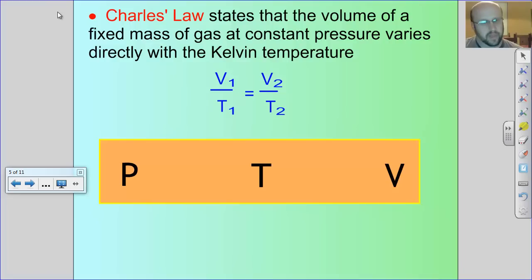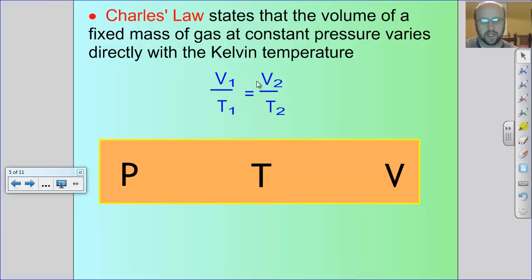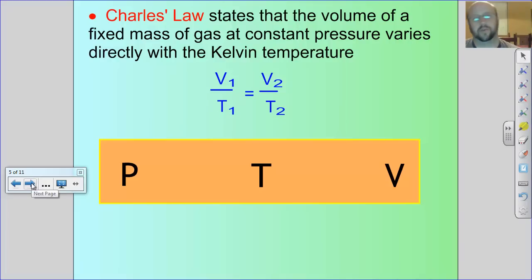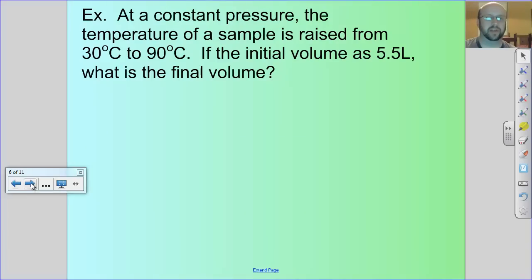How does that work algebraically? The formula is V1 over T1 equals V2 over T2. You won't have to memorize these formulas — you have a formula sheet. Let's work a problem.